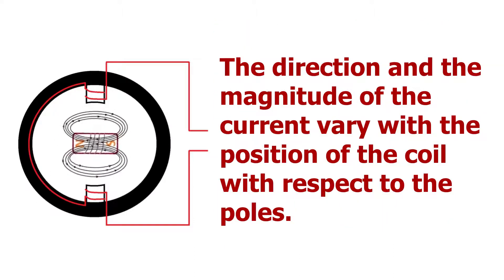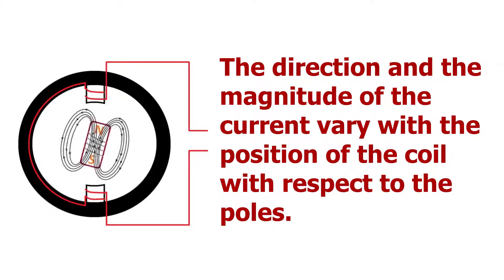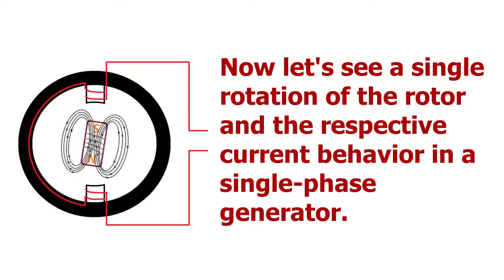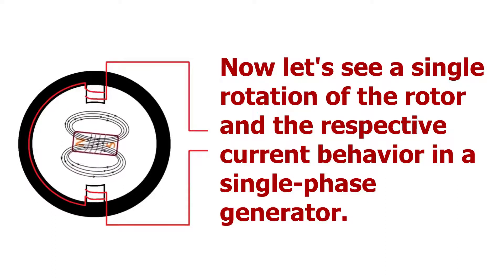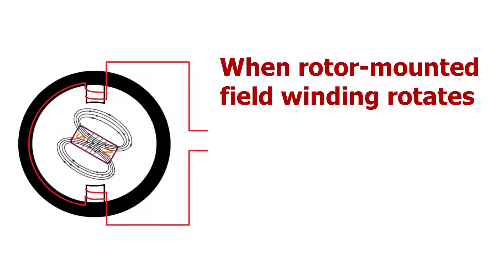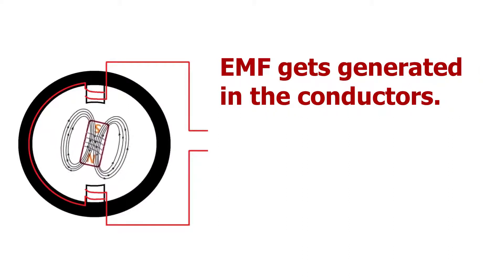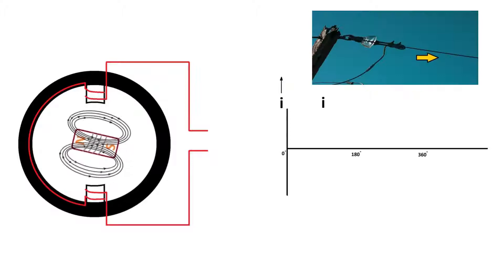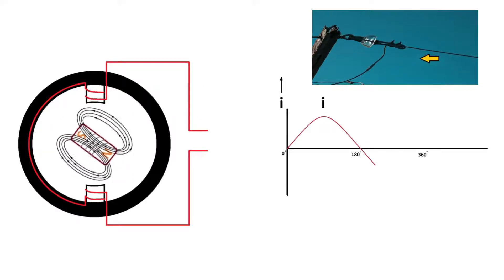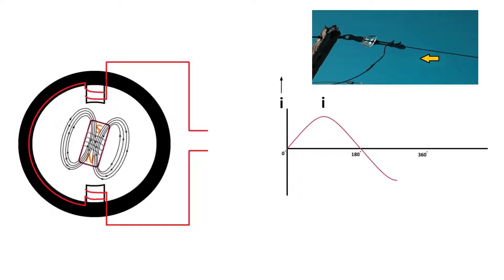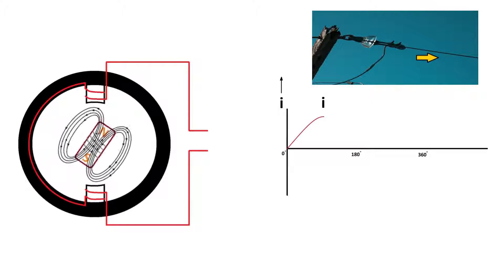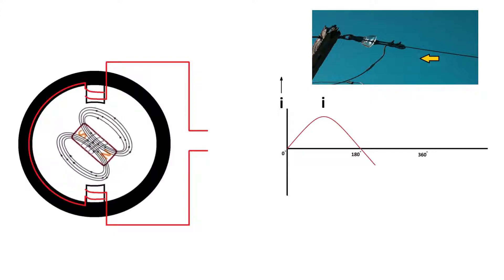The direction and the magnitude of the current vary with the position of the coil with respect to the poles. Now let's see a single rotation of the rotor and the respective current behavior in a single-phase generator. When the rotor-mounted field winding rotates, EMF gets generated in the conductors, causing current to flow. When concentrated magnetic lines of force — that is, the magnetic field — are cut across by these conductors, the current value reaches its peak, which means electron speed is maximum through the conductors.